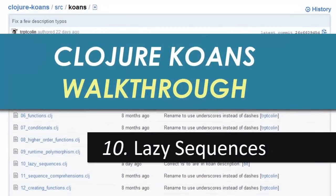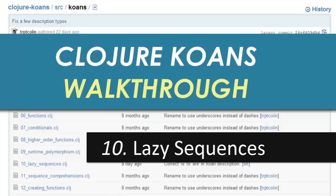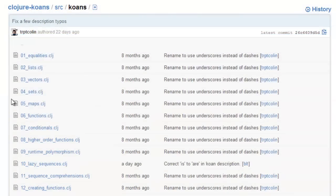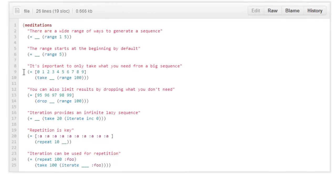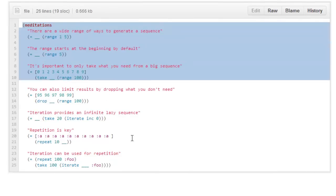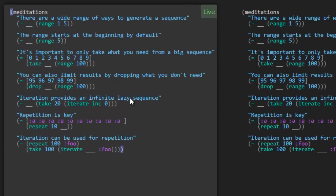Alright, I hope you're ready for some excitement. Today we're going to take a look at the Closure Cones, number 10, Lazy Sequences. So let me jump in here and open up this file and we're going to copy it right into Light Table. Here we go. So Lazy Sequences. I'm going to delete this meditations function real quick. Let's just look at each of these expressions. Here, let's look at the first one.